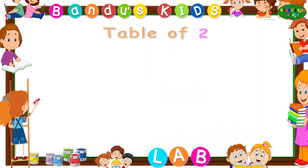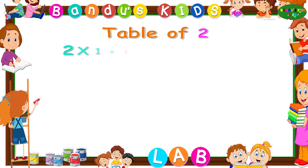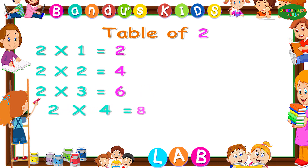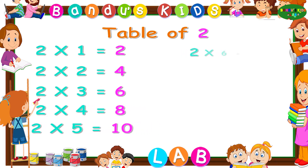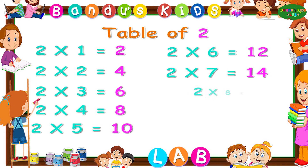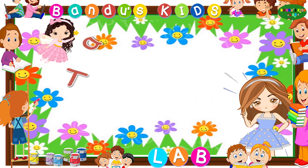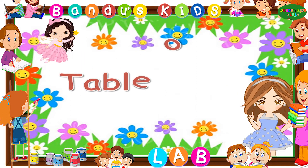Now let's revise the table of two one more time by singing. Two ones are two. Two twos are four. Two threes are six. Two fours are eight. Two fives are ten. Two sixes are twelve. Two sevens are fourteen. Two eights are sixteen. Two nines are eighteen. Two tens are twenty. Now it's your turn to say the table of two.